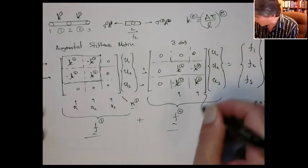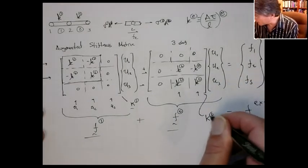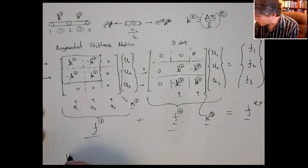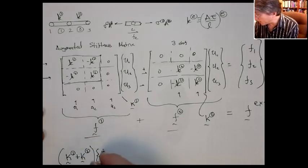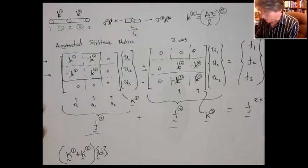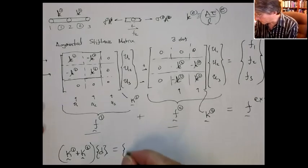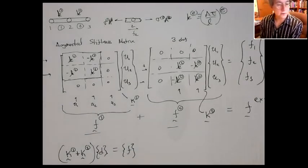if I call this big k2, what I'm left with is big k1 plus big k2, these are the augmented stiffness matrices, times the vector of the nodal unknowns has to equal the external force vector.